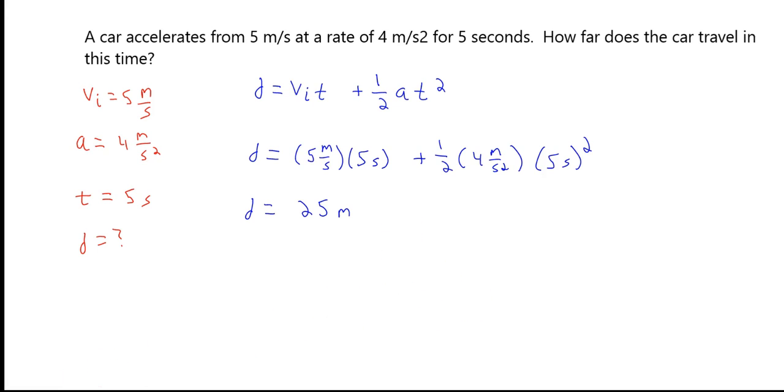To make the math easy here, I'm going to start by continuing to write down my one-half. I'm going to keep the 4 meters per second squared. And then I'm going to multiply by 25 seconds squared, so I've squared the 5 seconds.